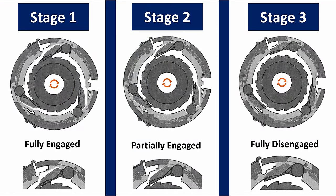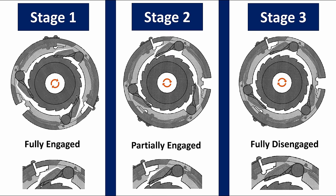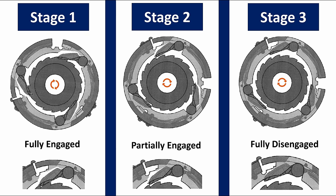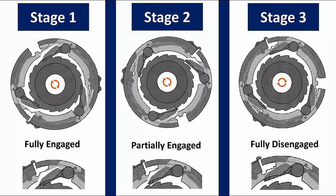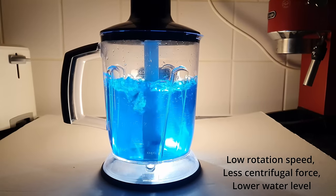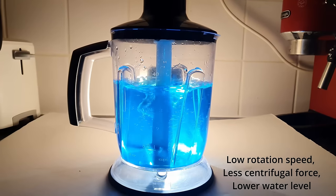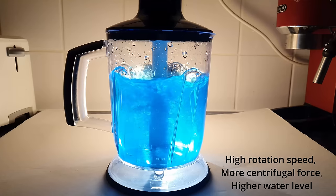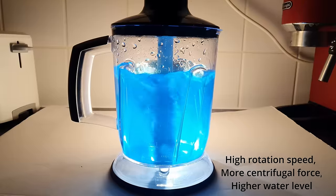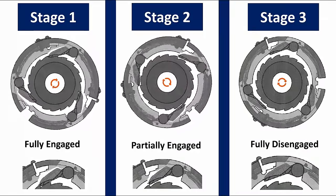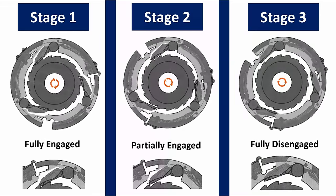When stationary, the spring force fully engages the teeth so that the two gears rotate together. However, as the rotation speed increases, the centrifugal force acting on the teeth begins to offset the spring force. For example, when I spin this jug filled with water, the water moves up to the sides — the faster I spin it, the higher the water goes due to more centrifugal force. Once the engine reaches a critical speed, the centrifugal force overcomes the spring force and the pawls fully retract.